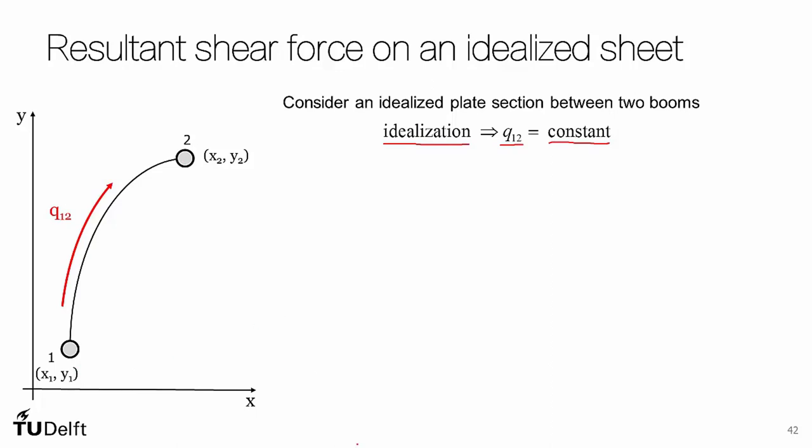Now what we want to do is find out what the resultant shear force on the idealized sheet is. To do this, let's look at the two components: the x and y component. First looking at the resultant force in the x direction, let's consider a small element delta s which is at angle phi with respect to our x-y coordinate system.